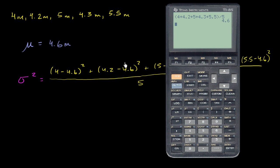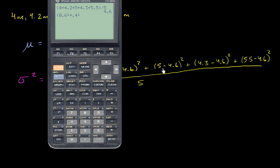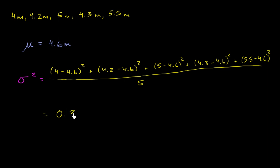Let's get the calculator out. 4 minus 4.6 squared — that's negative 0.6 squared, which is the same as 0.6 squared. Then 4.2 minus 4.6 is negative 0.4, but when we square it the negative disappears, so plus 0.4 squared. Then 5 minus 4.6 is 0.4, so plus 0.4 squared. Then 4.3 minus 4.6 is negative 0.3, so plus 0.3 squared. And finally, 5.5 minus 4.6 is 0.9, so plus 0.9 squared. Dividing by 5, we get 0.316.